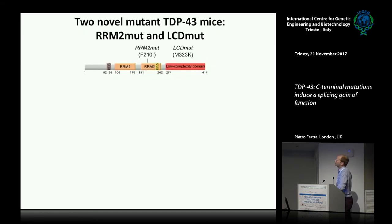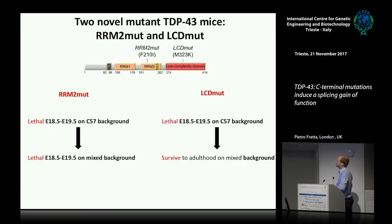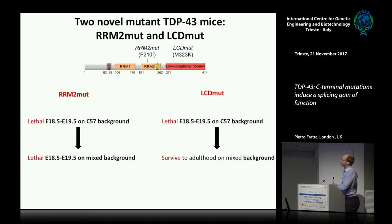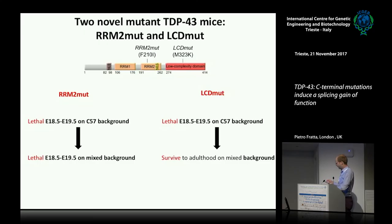We're talking about work from screening a chemically-induced mutation archive — two mutations that are not human mutations. One is in the crucial RRM2 RNA-binding domain, which we call the RRM2 mutation. One is in the LCD domain next to the human mutations, which we call the LCD mutant. Both mutations in homozygosity are lethal at the end of pregnancy, though you can still get tissue from them — confirming that both have a biological effect. Interestingly, when put on a mixed background, the LCD mutant actually survives to adulthood.